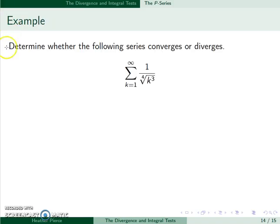For example, here, if I look at the denominator, I can rewrite this as k to the 3/4 power. And since 3 over 4 is less than 1, this thing will diverge.